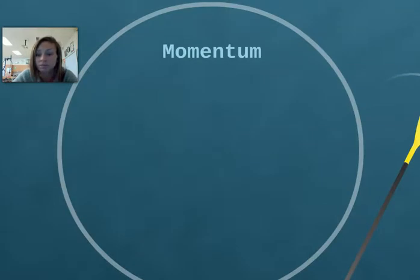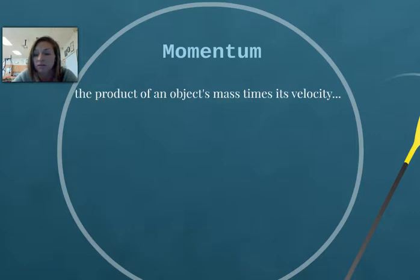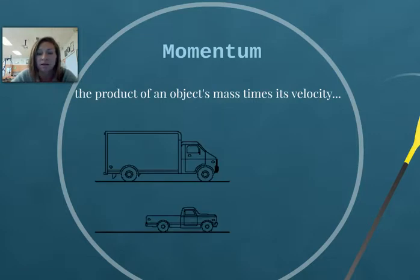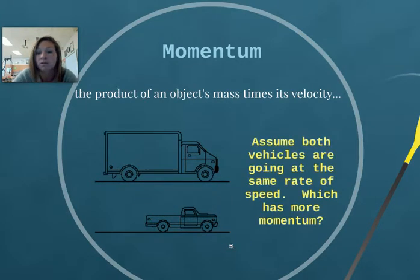Now, let's go on to momentum. And this is the product of an object's mass times its velocity. Consider the large truck, and then the pickup truck. Assume both of them are going at the same rate of speed. Which has more momentum? I'll give you a second to think about it.